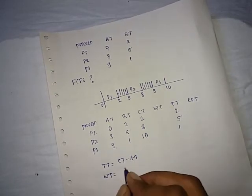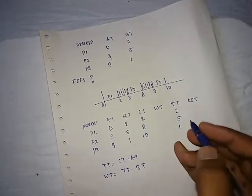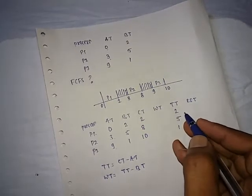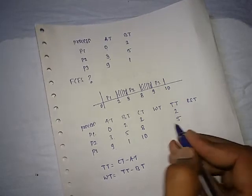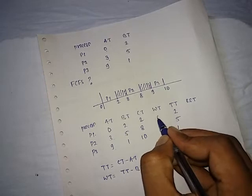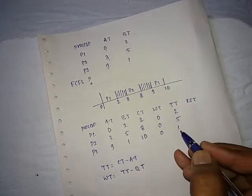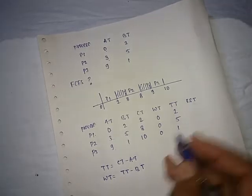Next one is waiting time. Waiting time is calculated by the formula turnaround time minus burst time. So, turnaround time we have calculated here, that is 2, 5 and 1 minus burst times column. This is 2 minus 2 becomes 0, 5 minus 5 becomes 0, 1 minus 1 becomes 0. That is the interesting part.